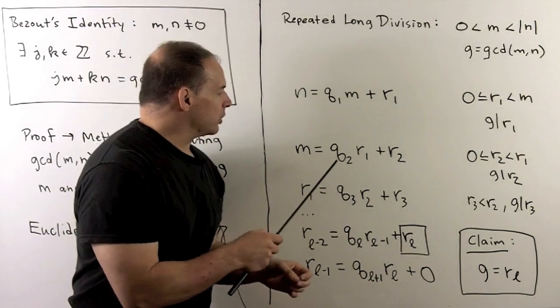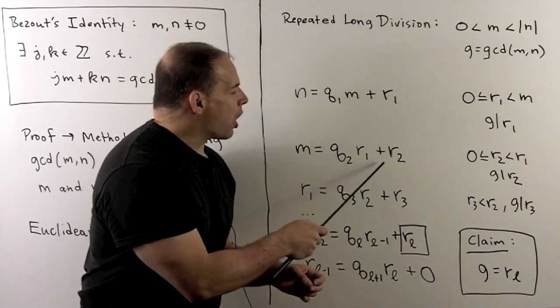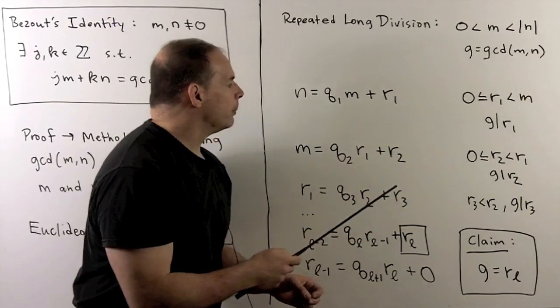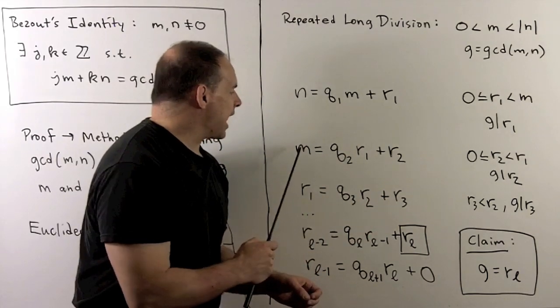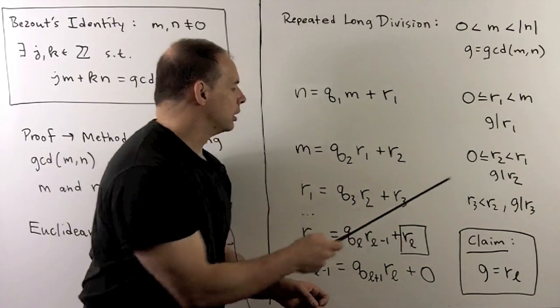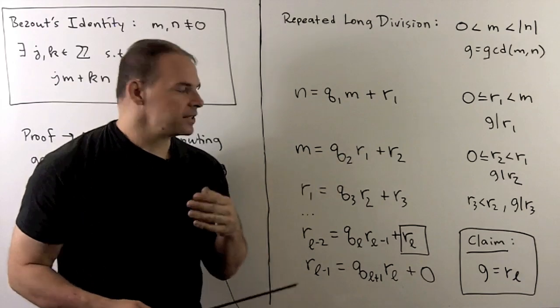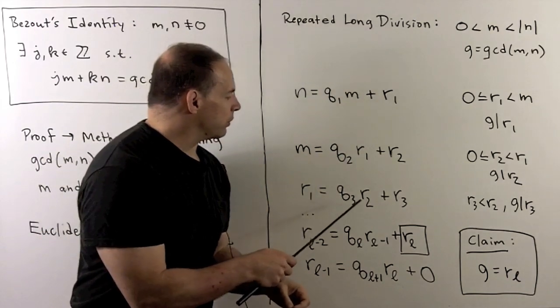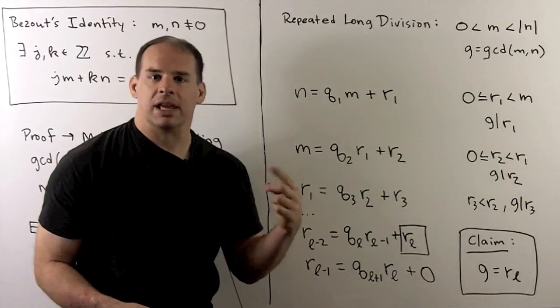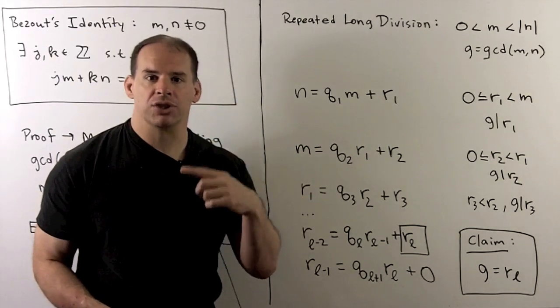So, the m is equal to q2 times r1 plus r2. So, our remainder r2 is going to be between 0 and r1, including 0. Because g divides m and r1, it must divide r2. Shift everything to the left, we have r1 equals q3, r2 plus r3. Then we see r3 less than r2, g divides r3, and so on and so on.